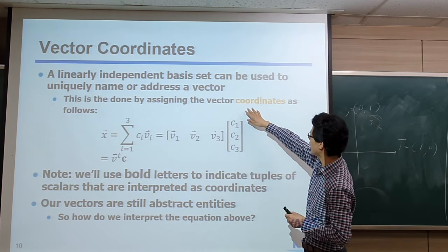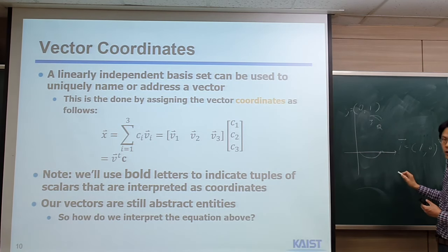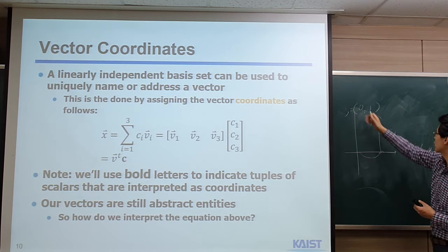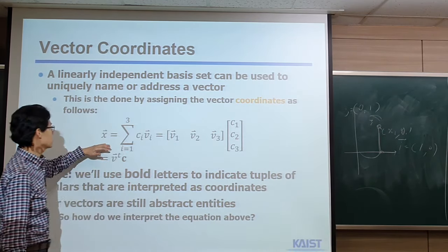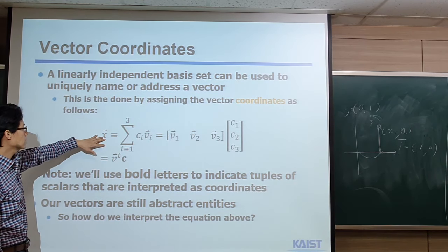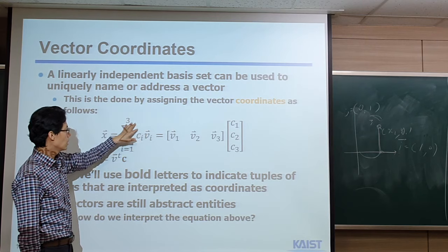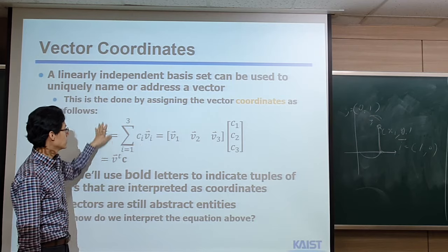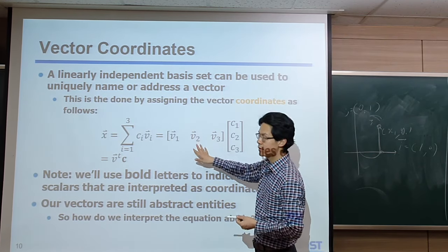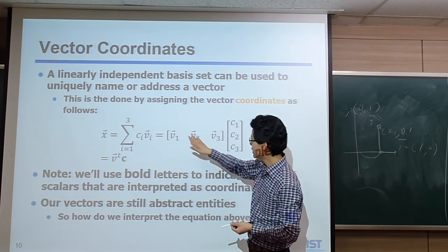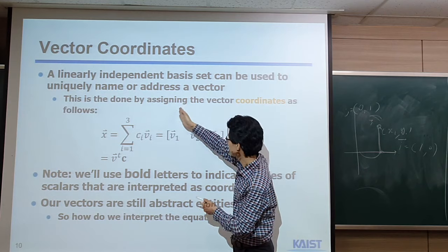Once we have this linearly independent basis, we can uniquely name certain points and vectors. This is done by assigning vector coordinates. For example, for a point we need to say that along the i-vector we move this amount — that's the x1 coordinate. Along the y-coordinate, we have to move that amount — that's the y1 coordinate. For the 3D case, a vector x can be represented by a linear combination of three basic vectors v1, v2, v3 scaled by coordinates c1, c2, c3. This equation can be represented in matrix form, where v1, v2, v3 are columns of a 3×3 matrix.